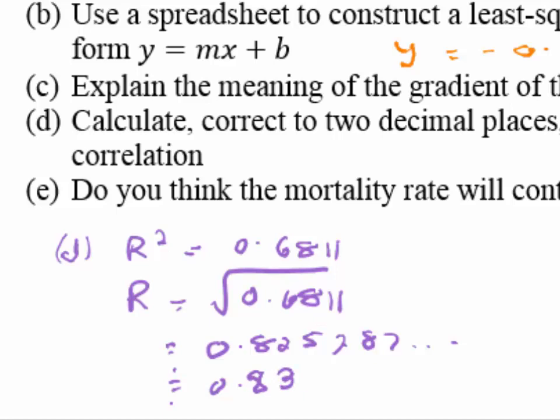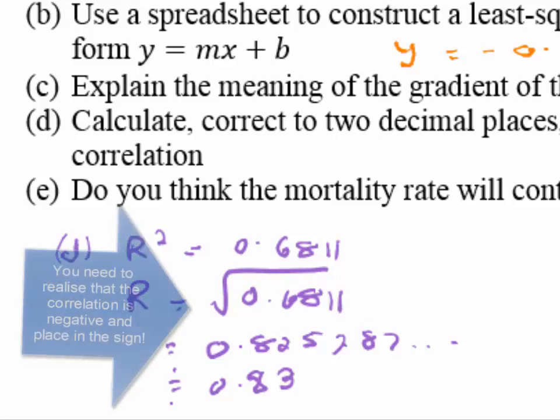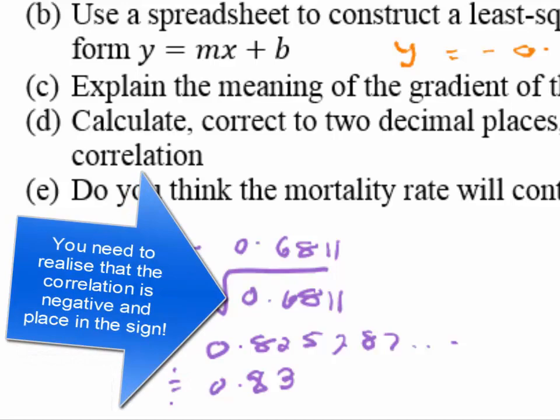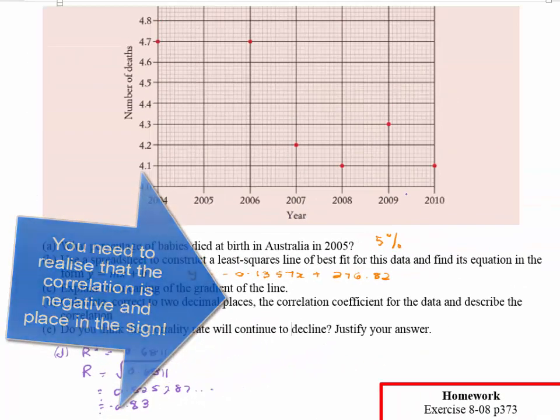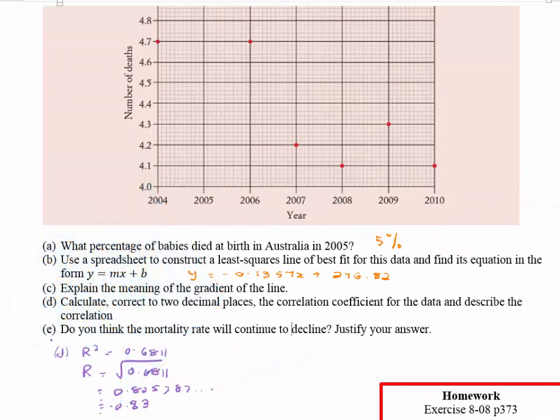So the correlation coefficient is approximately 0.83. I would say this represents a strong linear correlation, and since the trend is downward, I would describe it as a strong negative linear correlation.